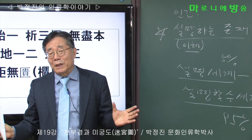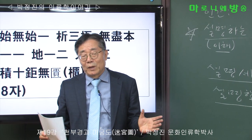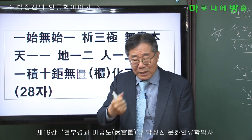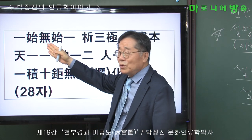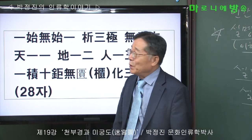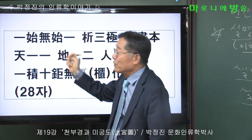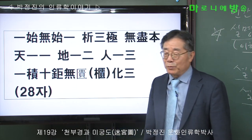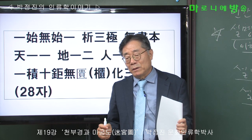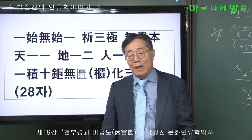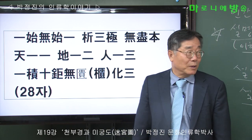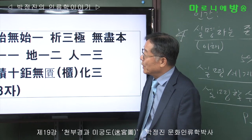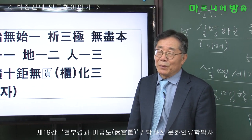우주는 어둠의 세계라 하죠. 그래서 이 천부경은 아는 세계가 있어도 그거는 시작이 아니다, 모르는 세계가 있다는 거죠. 일시무시일 이 다섯 자가 천부경의 머리 글자로서, 이것을 다 해독할 정도가 되면 경전 전체를 알았다고 말할 수 있을 정도의 구절입니다.